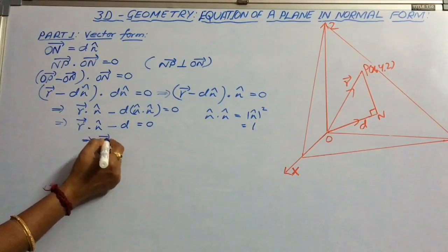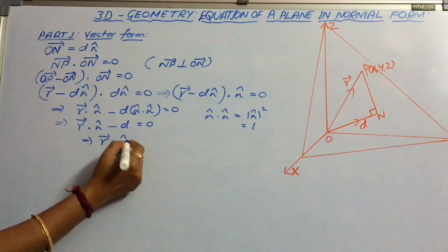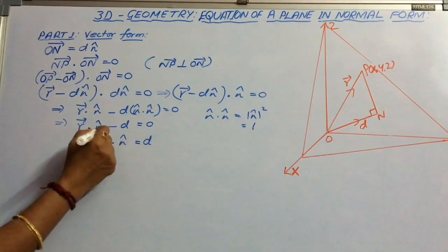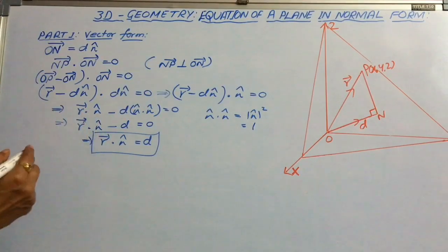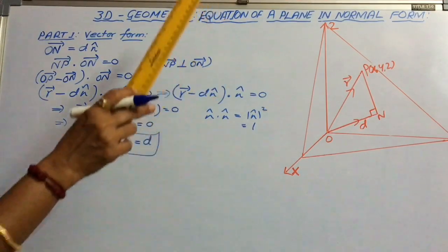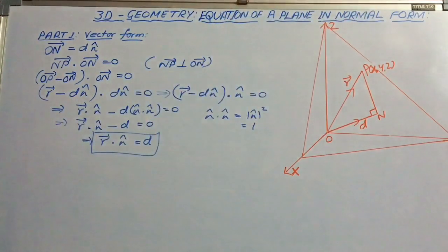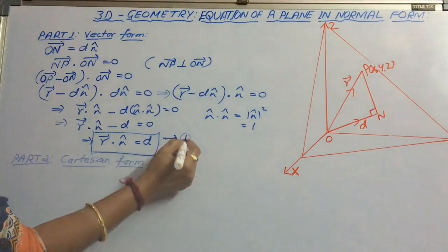Therefore, vector r dot n cap equal to d. This is the vector equation of the plane in normal form. Let us number this as equation 1. Now, to get the Cartesian form,